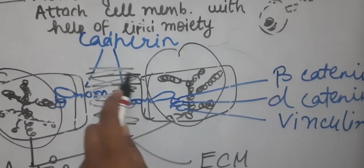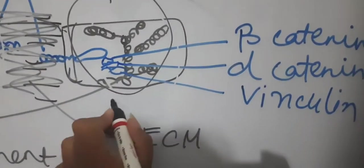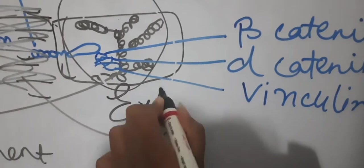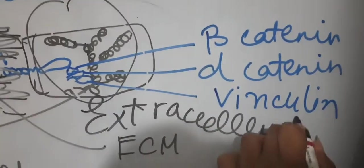Now here this particular structure is present in both of them - that is the actin filament. And the space that is here between both the cadherins...